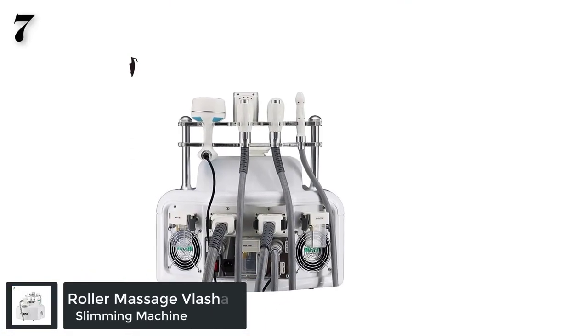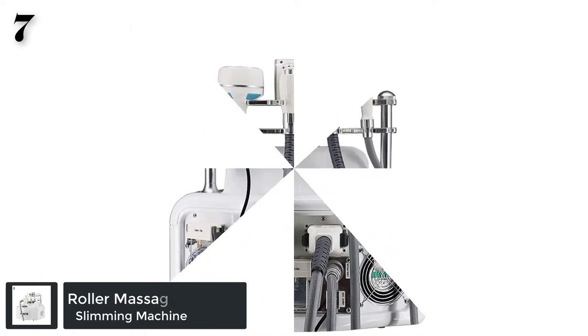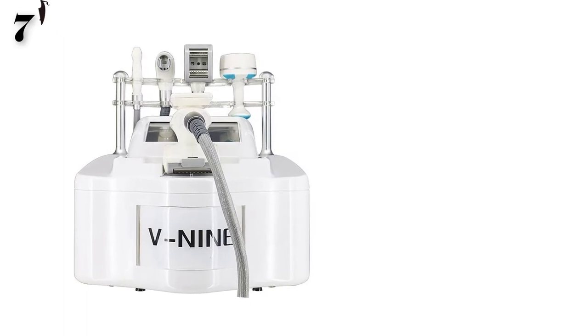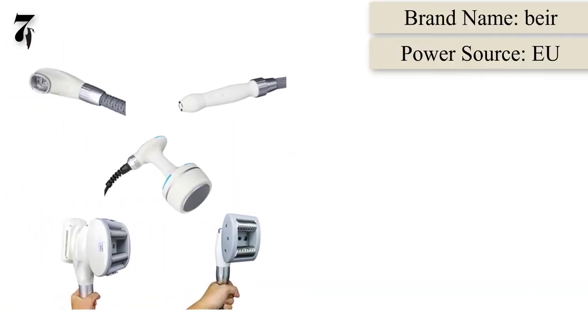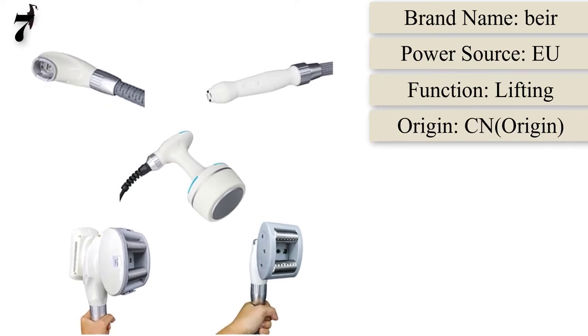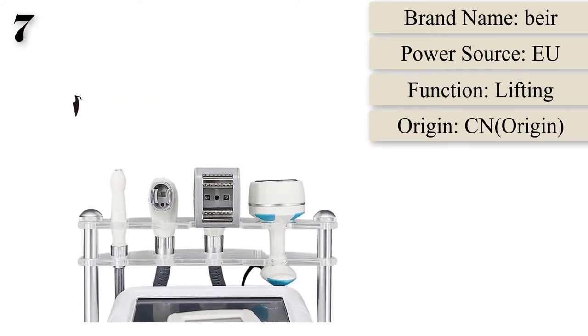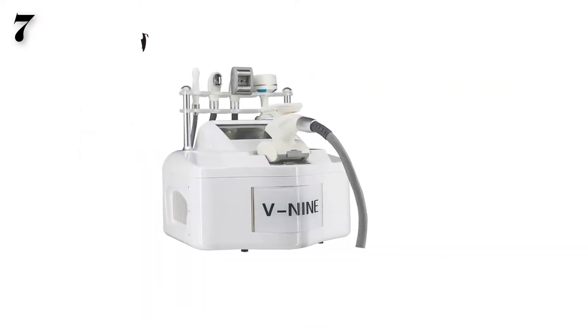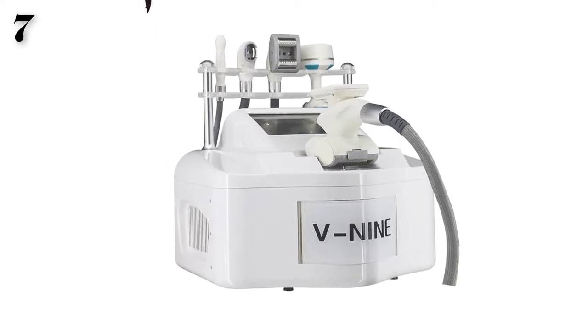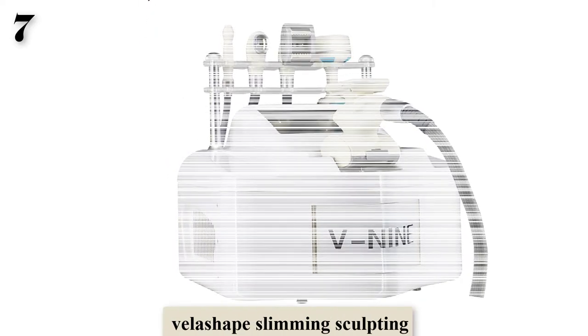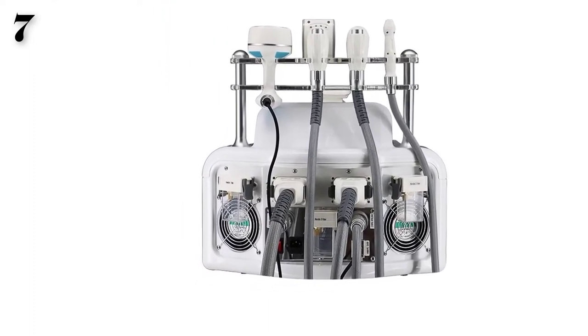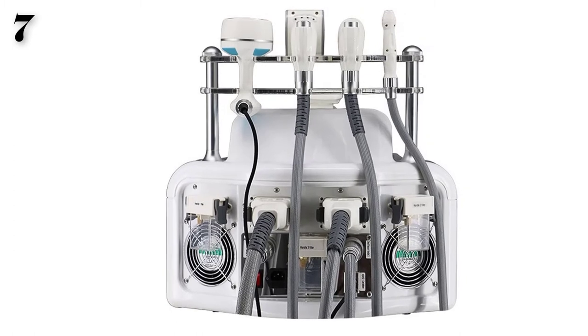Number 7: Portable Vela Shape V9 Vacuum Roller Body Massage 40K Ultrasonic Cavitation RF Radio Frequency Slimming Machine. Functions: body slimming, contouring and shaping, fat and cellulite reduction, skin tightening, wrinkle removal, warm vacuum cellulite massage, eyes area treatments, face wrinkle removal and lifting, promote cell metabolism, improve blood circulation, increase skin elasticity.